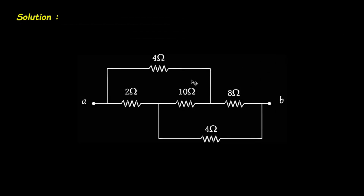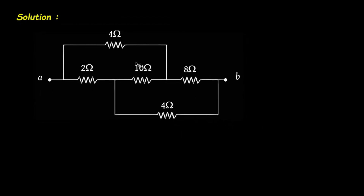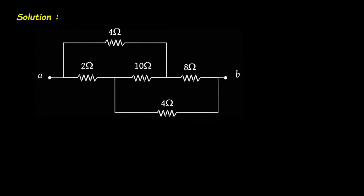First of all, we will take this circuit. We can solve this circuit by using two techniques. One is by Wheatstone Bridge, and the second is by transforming this star-connected network into its equivalent delta.